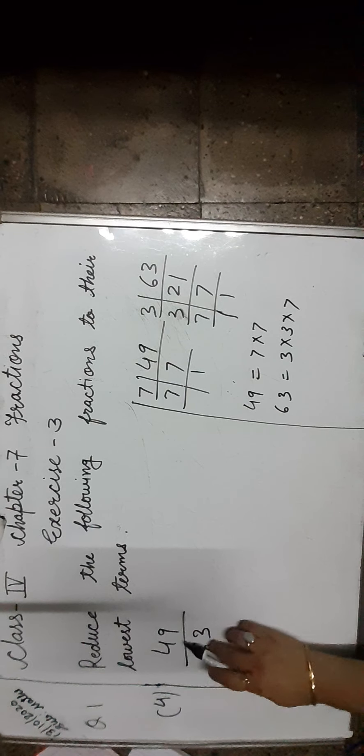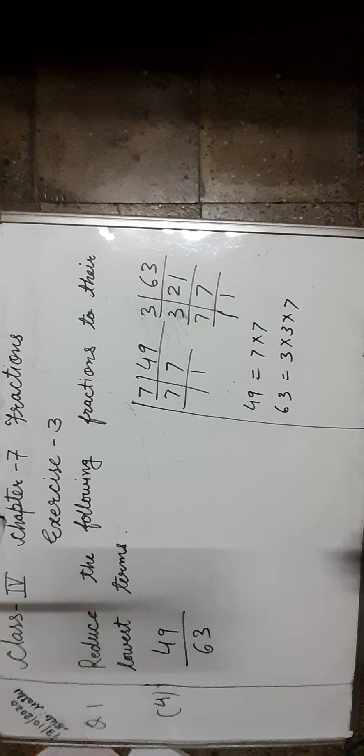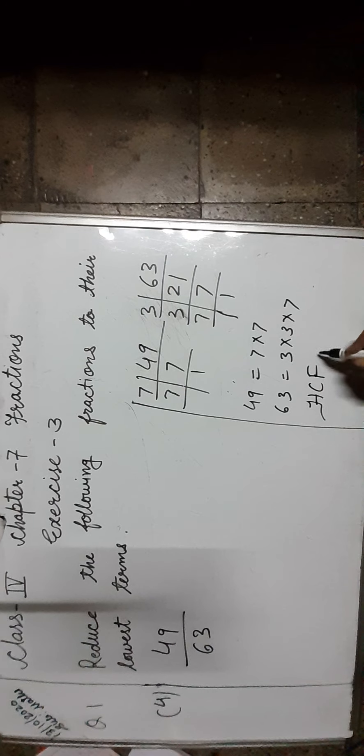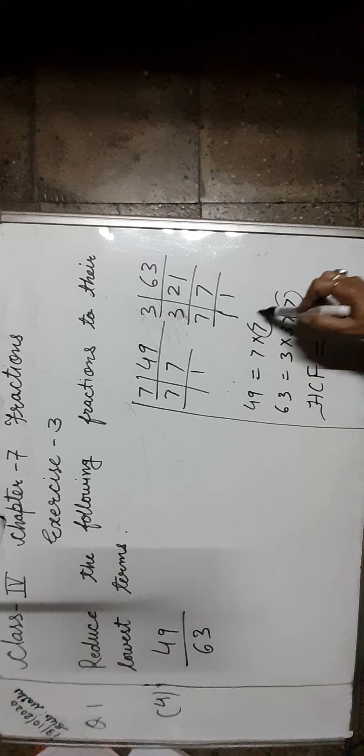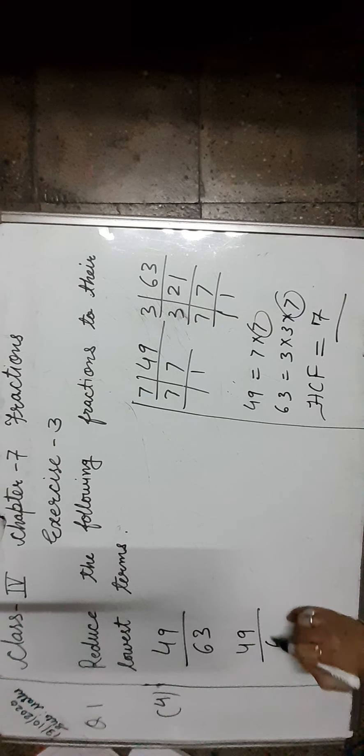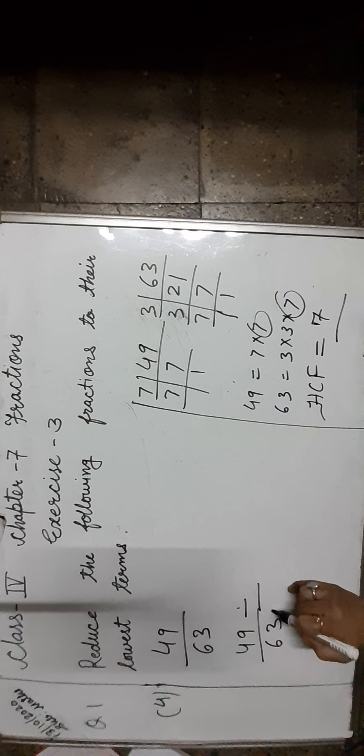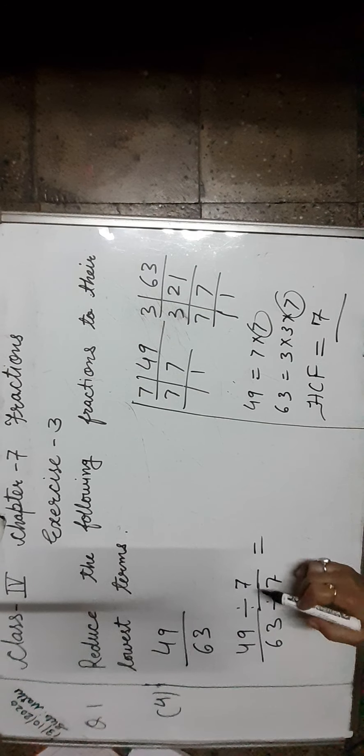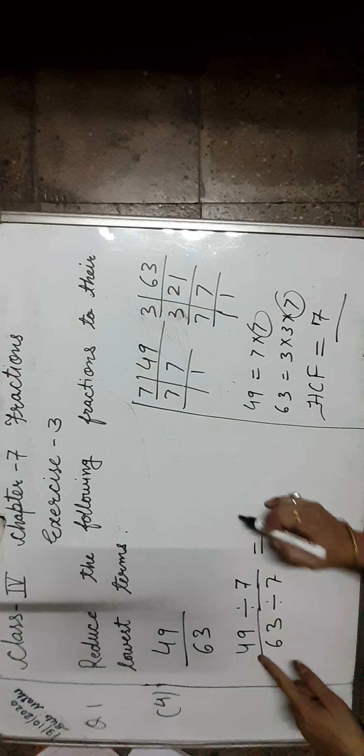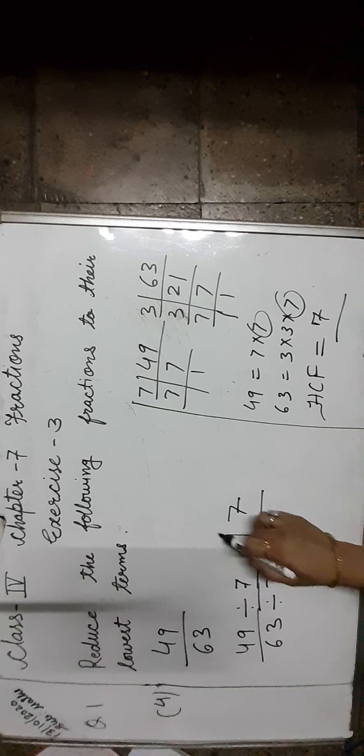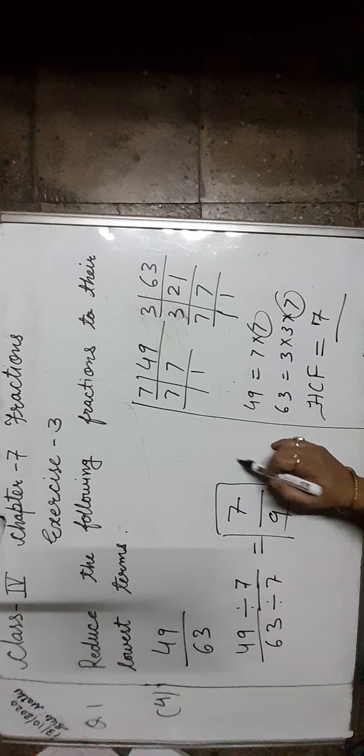Now, next one is 49 upon 63. Let us find HCF of 49 and 63. The highest common factor of 49 and 63 is 7. Let us divide 49 and 63 by 7. When we divide, 7 times 7 is 49, 7 times 9 is 63. So the lowest term of 49 upon 63 is 7 upon 9.